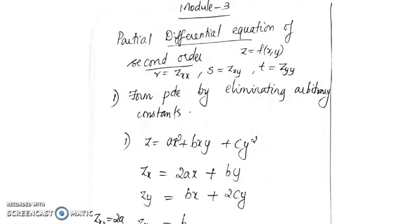Then we will look at how to classify a general second order PDE. A general second order PDE can be classified into different types — it can be either hyperbolic, elliptic, or parabolic. We will look at how to classify different second order PDEs and in each case how to find the solution.